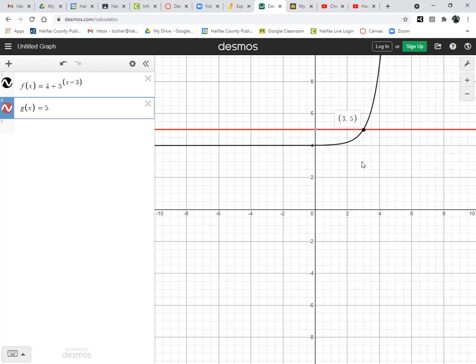When we solve equations, we solve for x. So we're only going to look at the x value, and the x value for this ordered pair is 3. So I know that 3 is my answer for this equation.